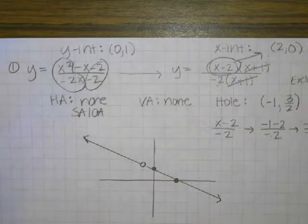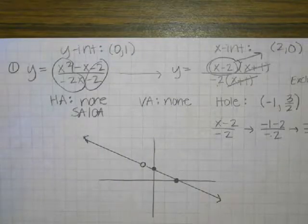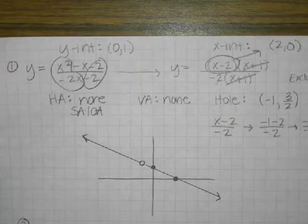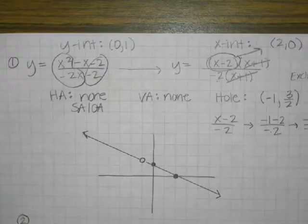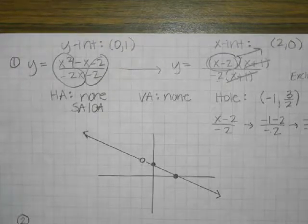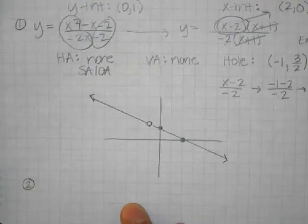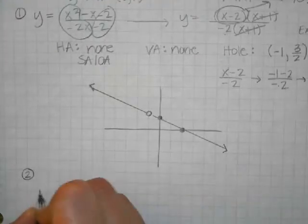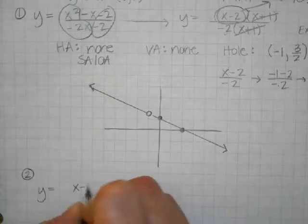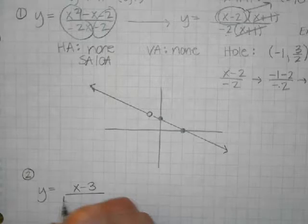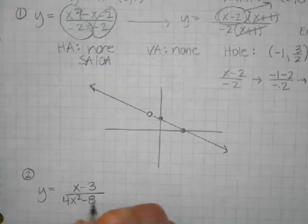Are these always going to be straight lines? No — a straight line is kind of weird; usually they're something else. All right, let's look at number two. You guys are doing a good job of asking questions — let's keep asking questions if we don't understand something. So for the next one, we're going to say y equals x minus 3 over 4x squared minus 8x minus 12.